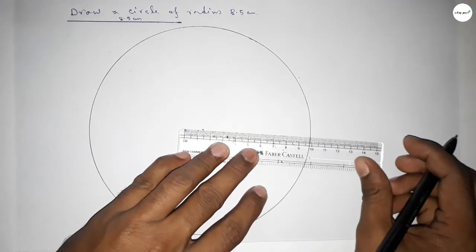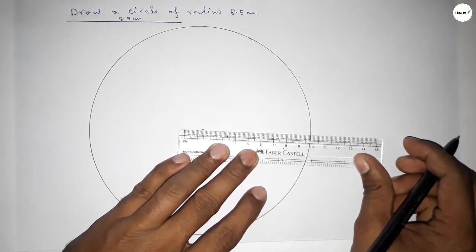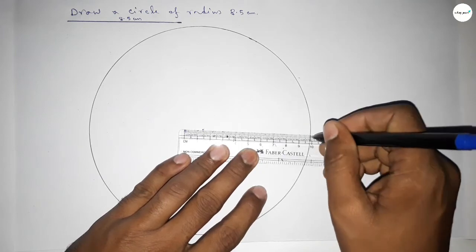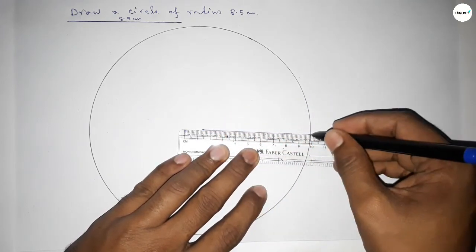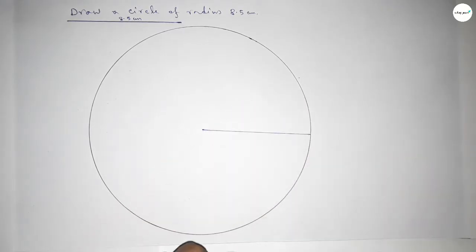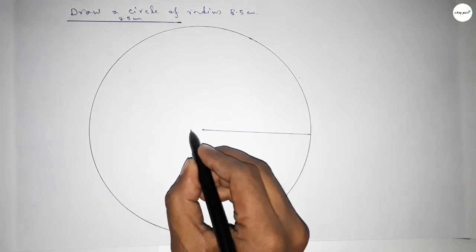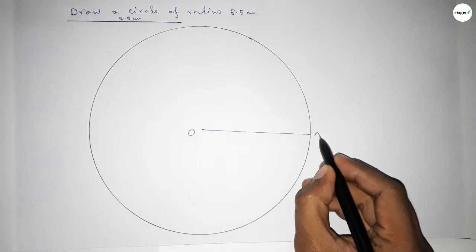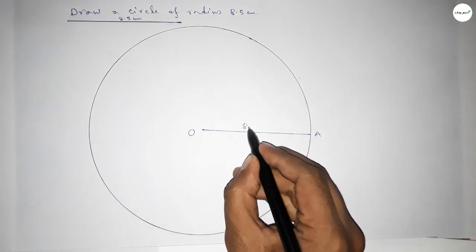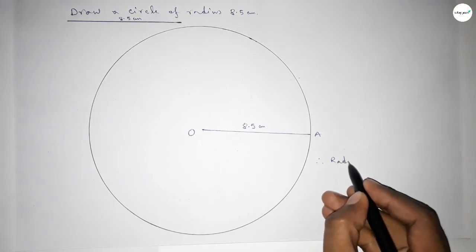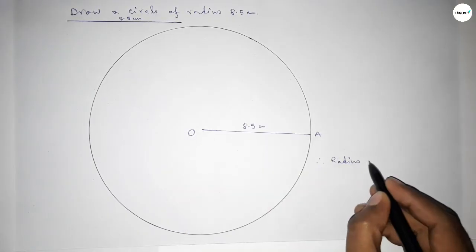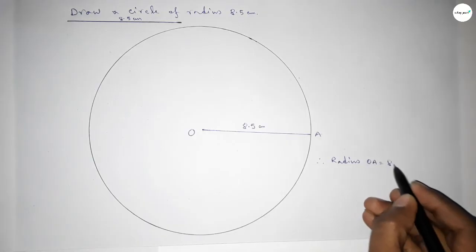And this is the radius of this circle. So first joining this line, and taking here the center O and here A. So OA is 8.5 centimeter, so therefore radius OA equals 8.5 centimeter.